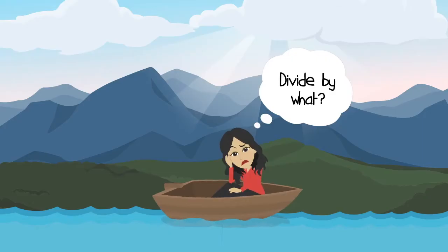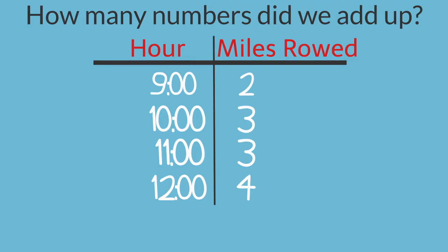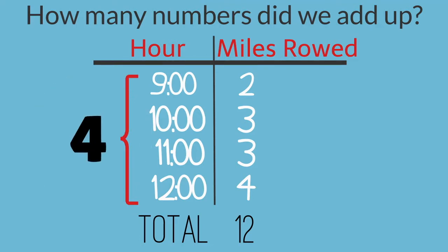Divide. Divide by what? Wait. How many numbers did we add up? Well, from 9 to 12 is 4 hours. There are 1, 2, 3, 4 hours that she rowed. So we're going to divide by 4.